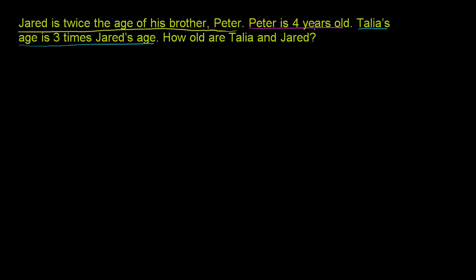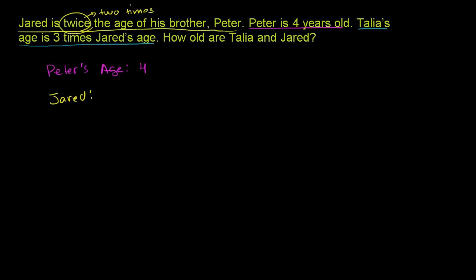So let's write this down. We have Peter is four years old — Peter's age is four. Jared is twice the age of his brother. Twice is the same thing as two times the age of his brother.